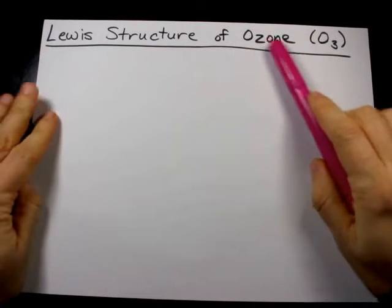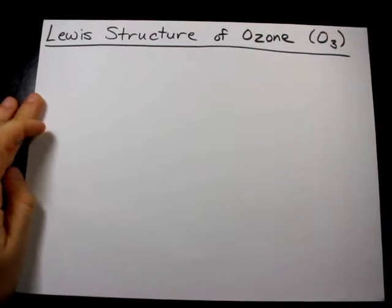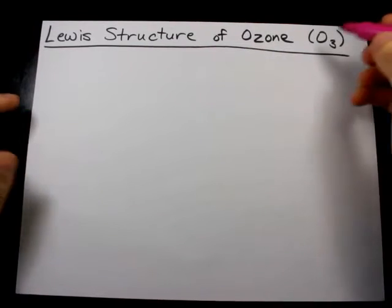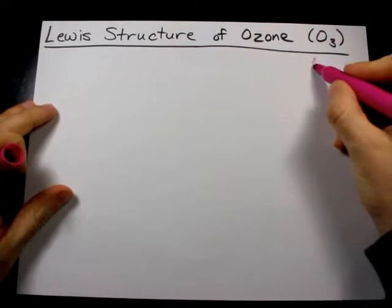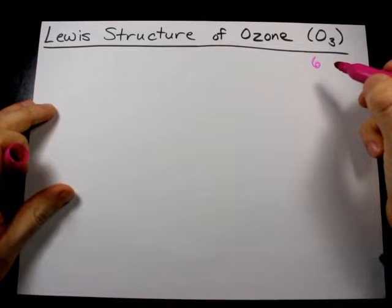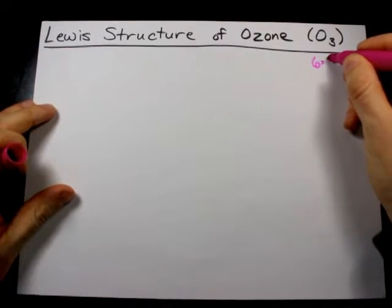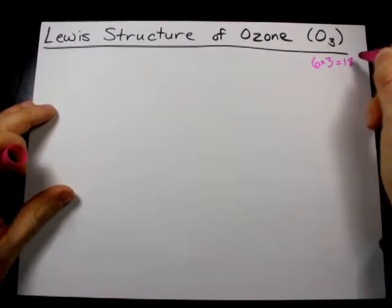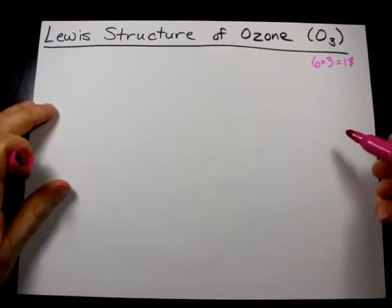Let's draw the Lewis structure for ozone, which is three oxygen molecules. Each oxygen has six valence electrons, and so when there are three of them there are 18 valence electrons to be distributed throughout the molecule.